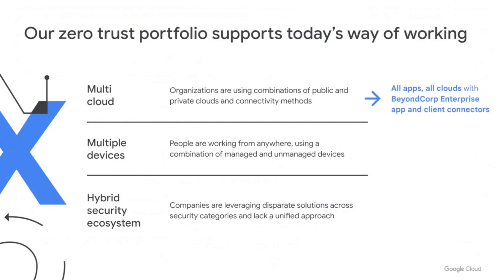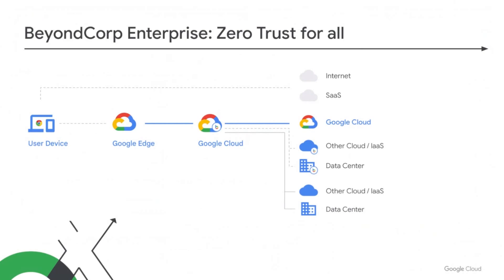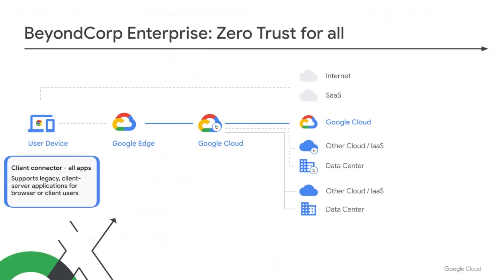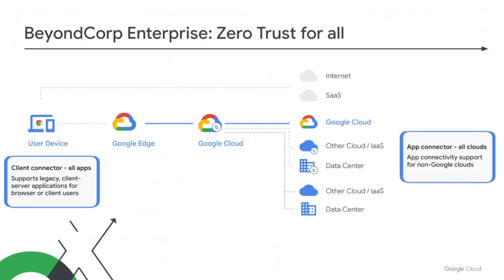By clouds, we're talking about: can I provide Zero Trust in front of my apps regardless of where they live? With BeyondCorp, our ability to provide access has now been expanded beyond GCP apps to apps sitting outside of GCP, connecting over various options — it could be over an interconnect, over a Cloud VPN, or now with our new app connector, over the internet. This gives you the flexibility to connect to those apps regardless of where they live.